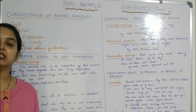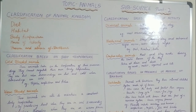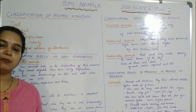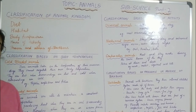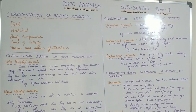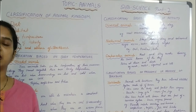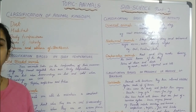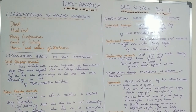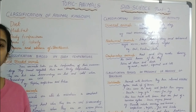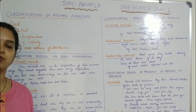Cold-blooded animals can be seen in the reptiles — reptiles like crocodiles, alligators, and lizards. Amphibians are also cold-blooded animals; amphibians include the frog, the toad, and fishes — all types of fishes. They are cold-blooded because they change according to the surroundings and don't regulate their body temperature.